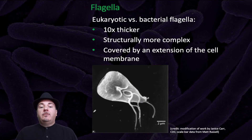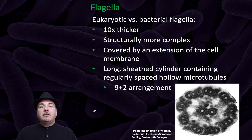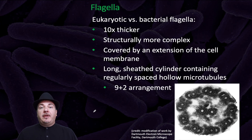Let's begin talking about these structures, first with the flagella — eukaryotic versus bacterial flagella. Eukaryotic flagella are about 10 times thicker than bacterial flagella. They're structurally more complex, and they're covered by an extension of the cell membrane. Here's an example of a eukaryotic flagella you can see on this microorganism. They're long, sheathed cylinders containing regularly spaced hollow microtubules in a 9 plus 2 arrangement. You can see an electron microscope image of a cross-section of the eukaryotic flagella with the 9 plus 2 arrangement here.